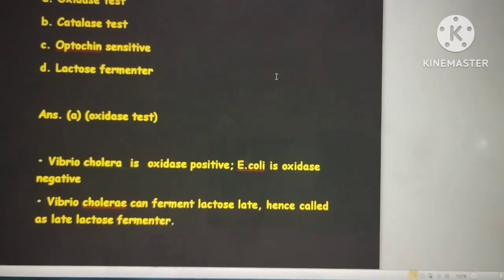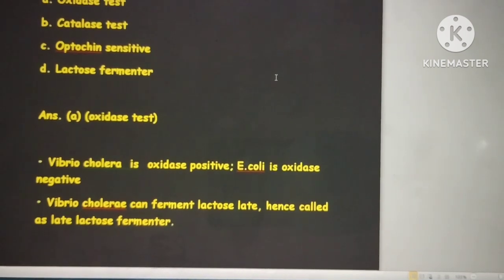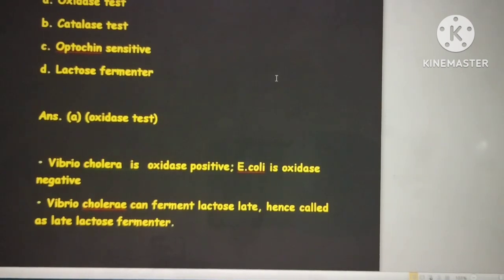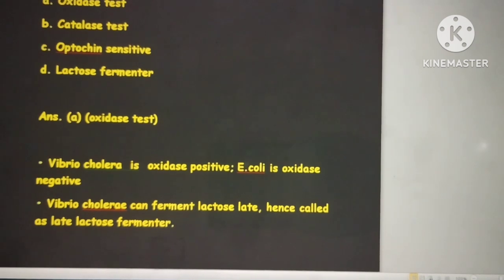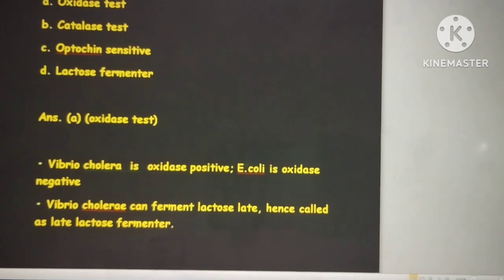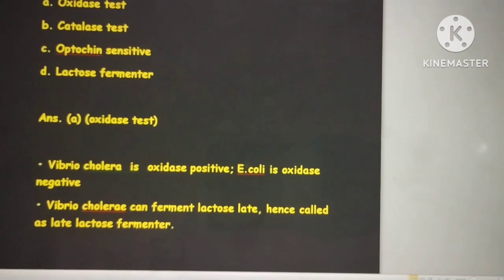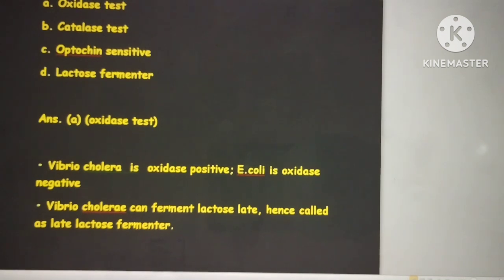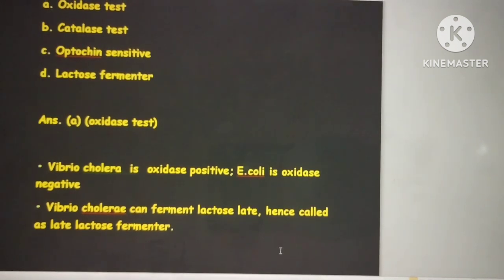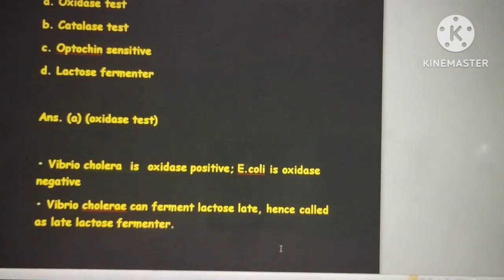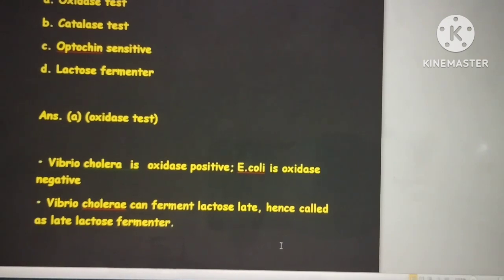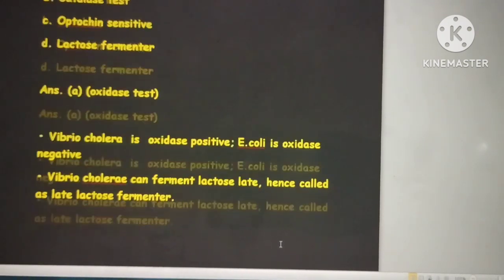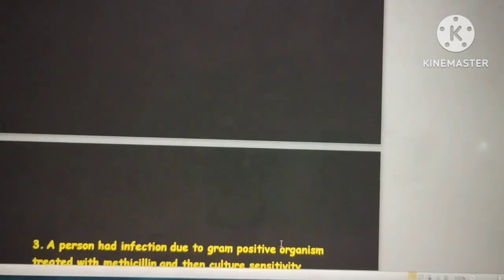These three tests - bile solubility, inulin, and optochin - are differentiating features. They are sensitive for Streptococcus pneumoniae whereas resistant for viridans.